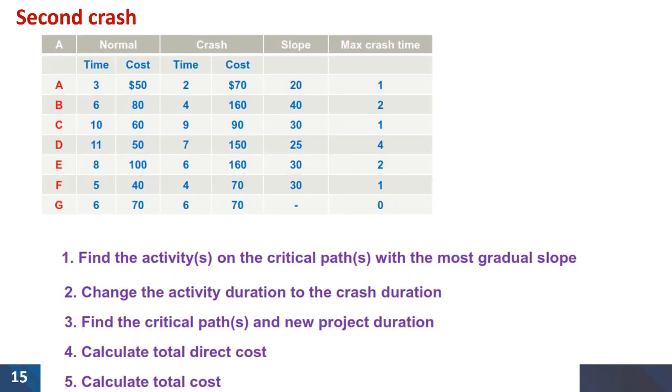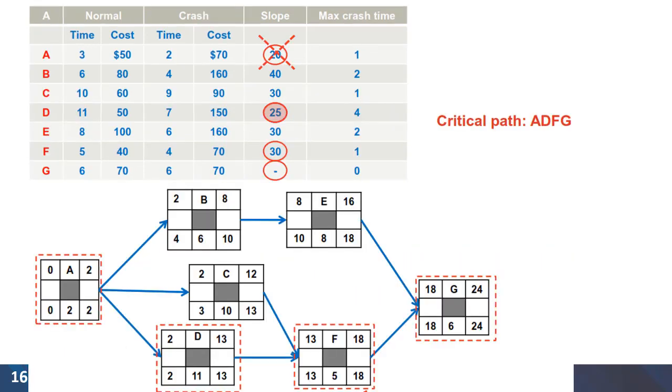We will follow the steps again. In this situation we have four activities that are on the critical path and the best choice is activity D with the slope of 25.